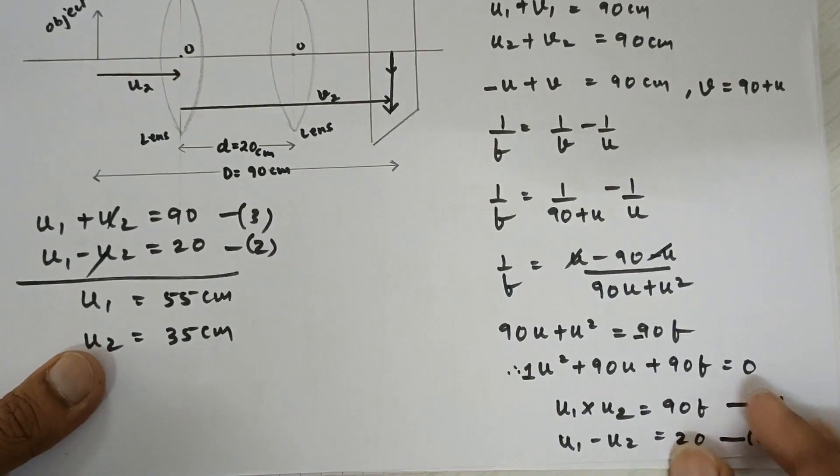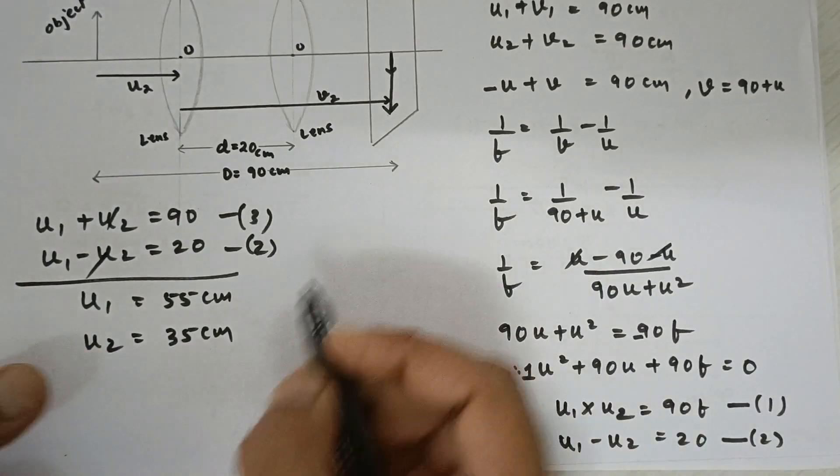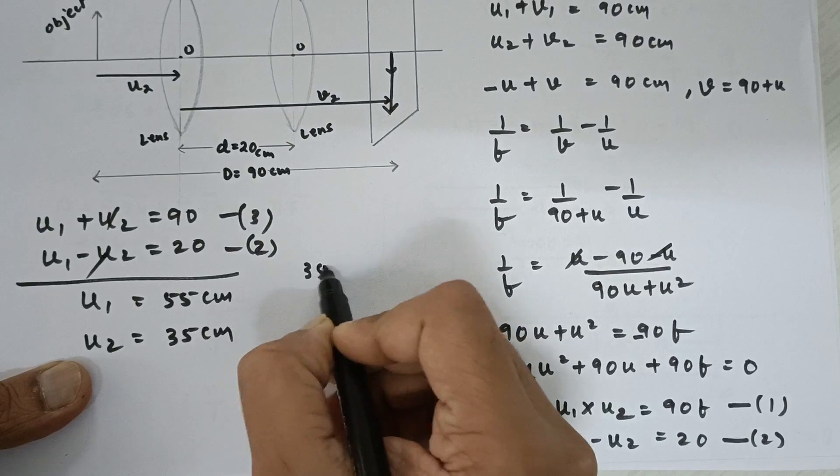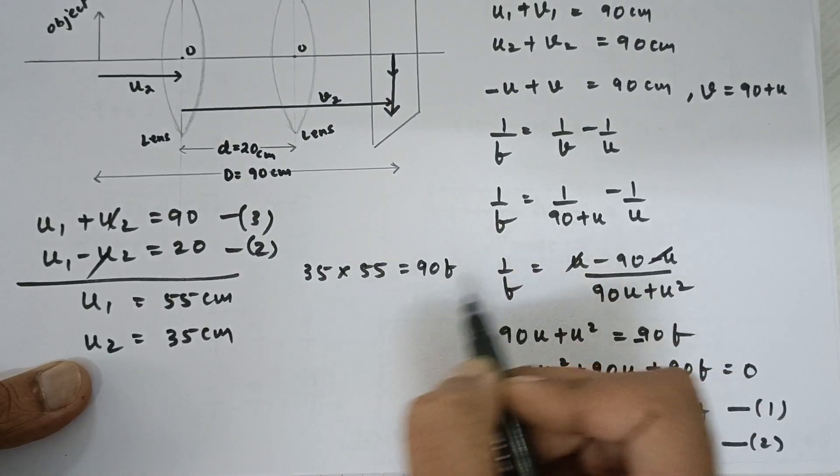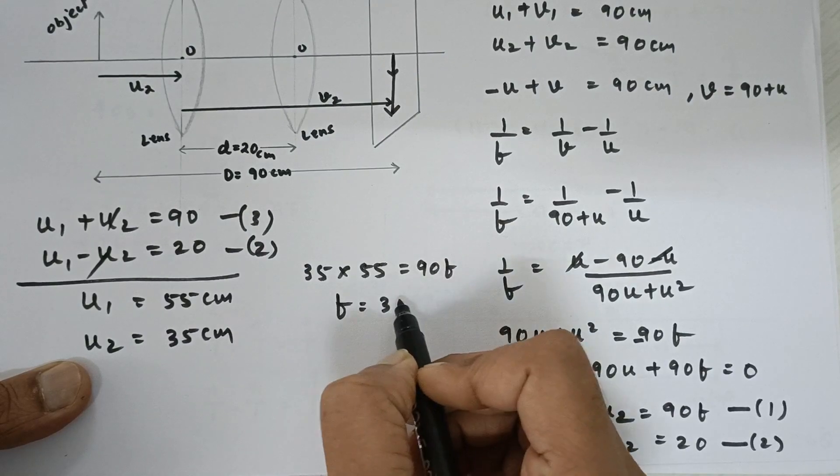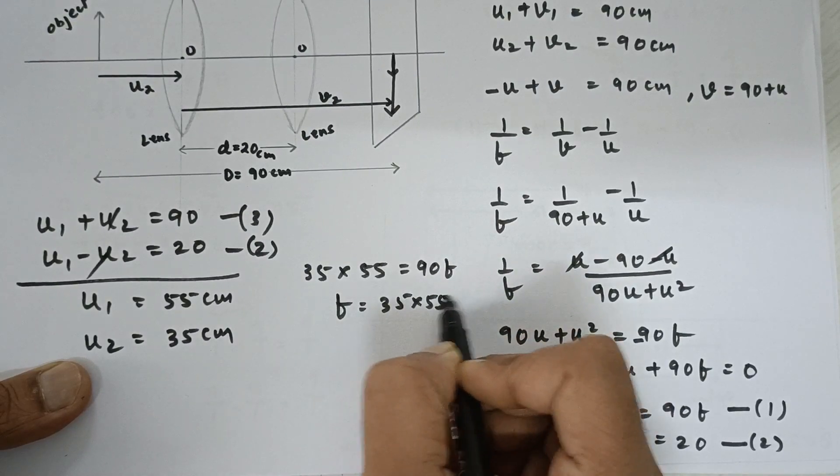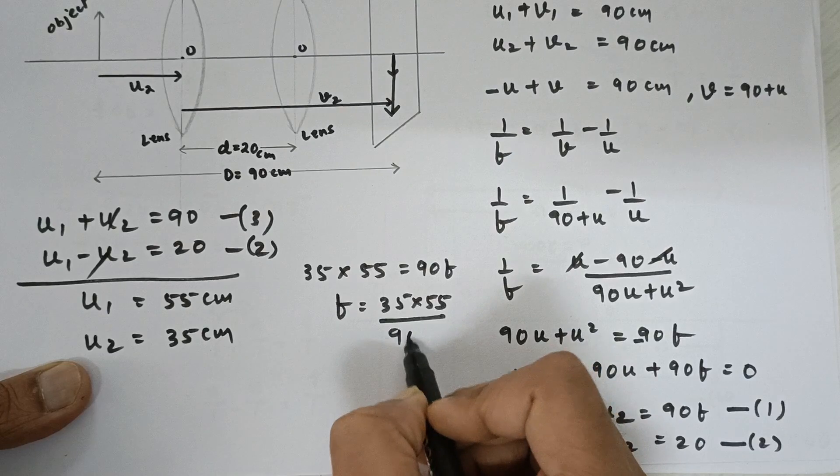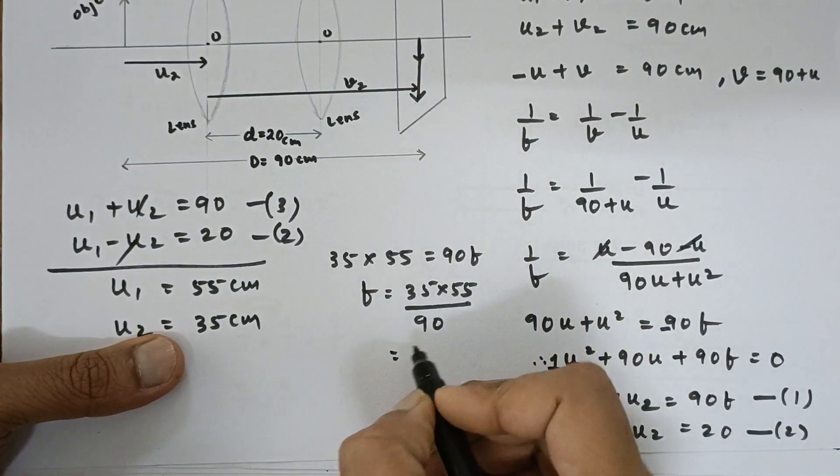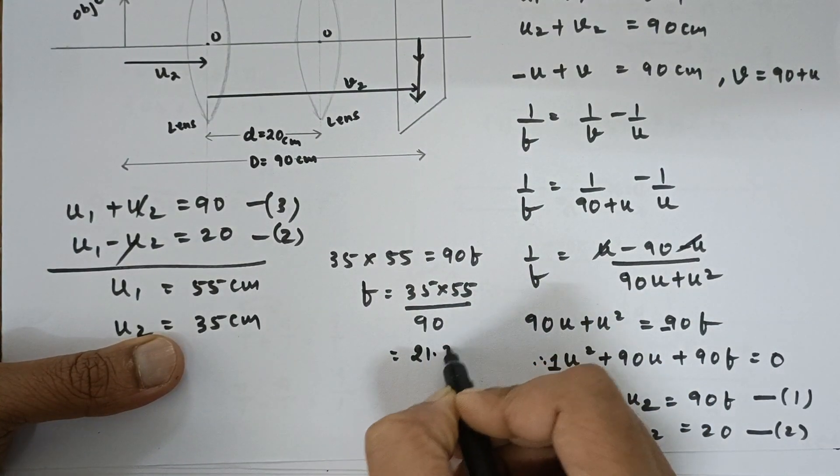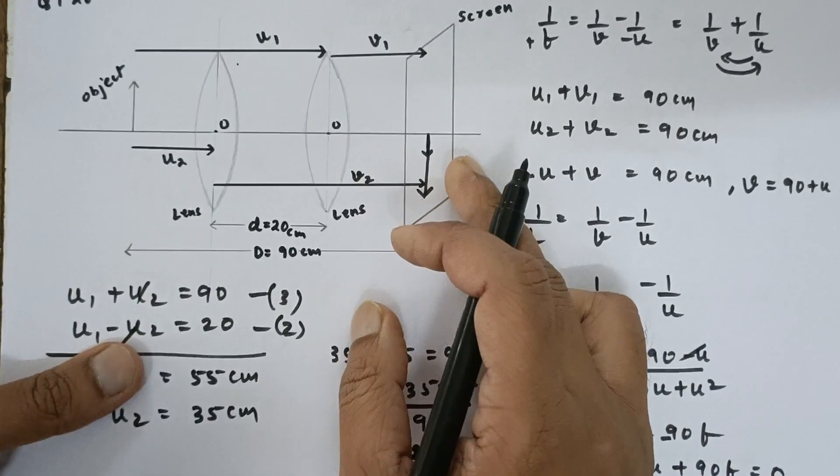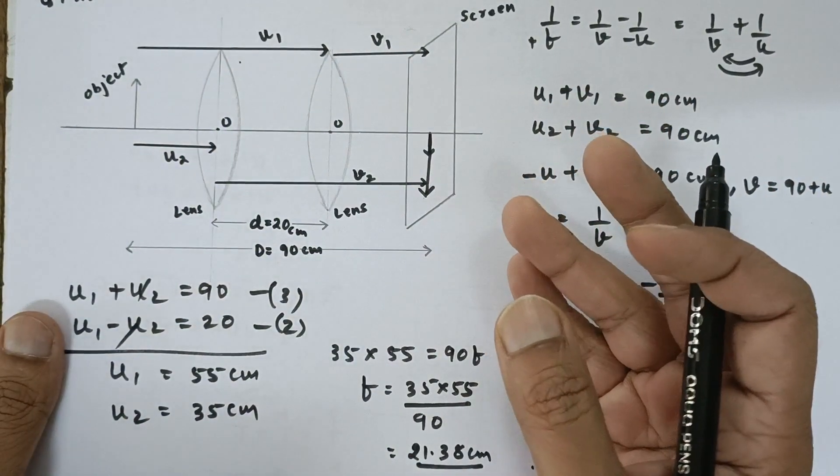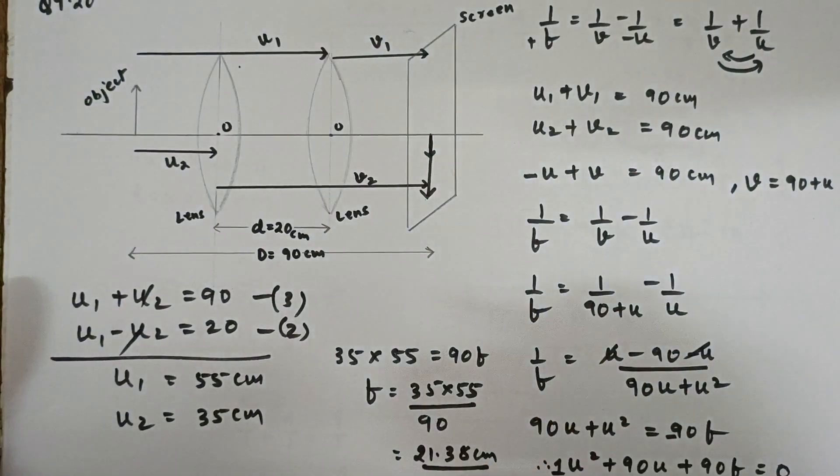Now, I am going to plug this value in the first equation. So, it becomes 35 into 55 is equal to 90 f. Now, if you will find the value that is 35 into 55 divided by 90. So, if you solve this you will get this value as 21.38 centimeters which is the answer to our problem that would be the focal length.